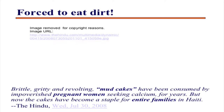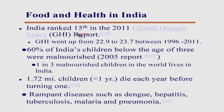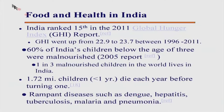A newspaper article showed how, driven to starvation, even children have to feed on mud cakes — that is the level of starvation that exists in the world. India is ranked 15th in the global hunger index, with roughly 23 percent of people going hungry. Malnourishment statistics are also very disturbing: 60 percent of India's children below age 3 are malnourished according to a 2005 report. Related to hunger and poverty is the issue of poor sanitation and infectious diseases.